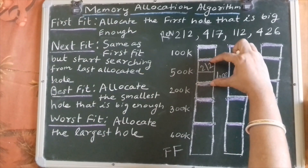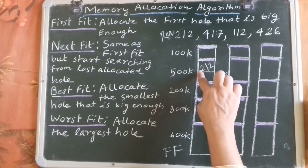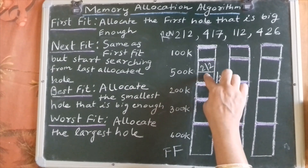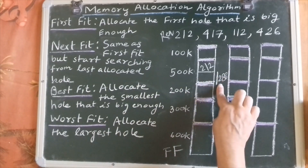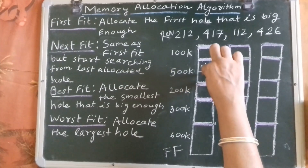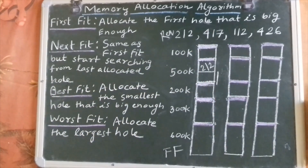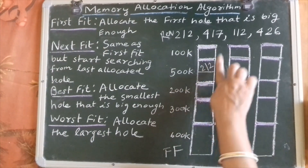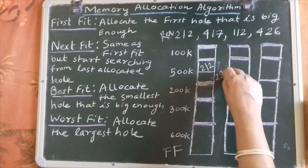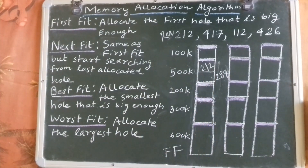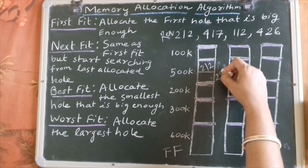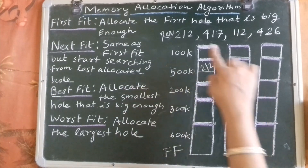This leftover space of 288k is called a hole, not a partition. The partition is the original memory block, and the hole is the leftover space after accommodating a process. So after placing the 212k process in 500k, we have a hole of 288k remaining.